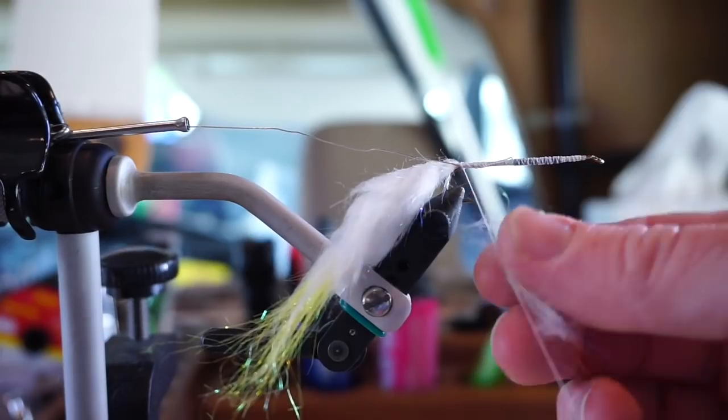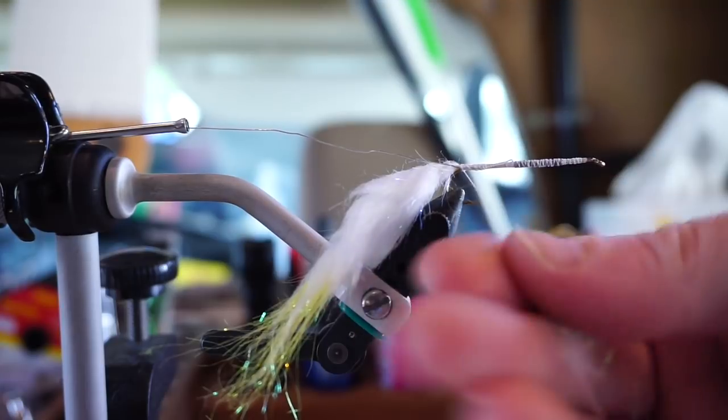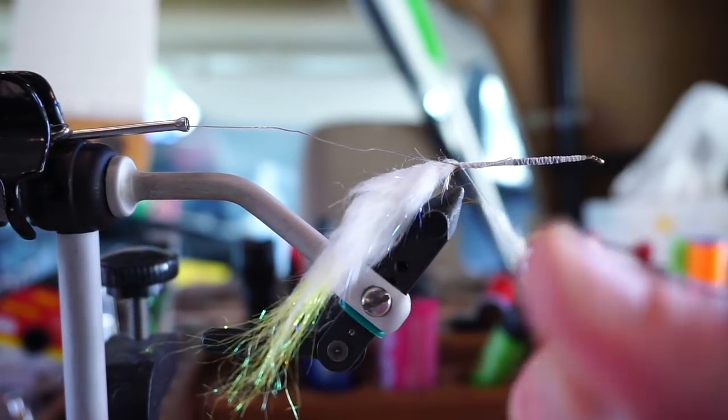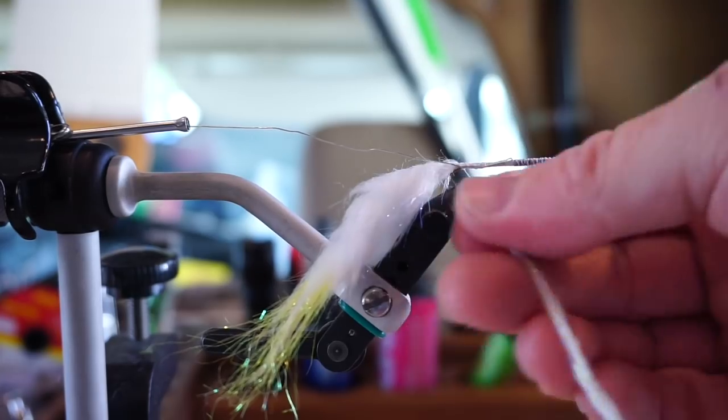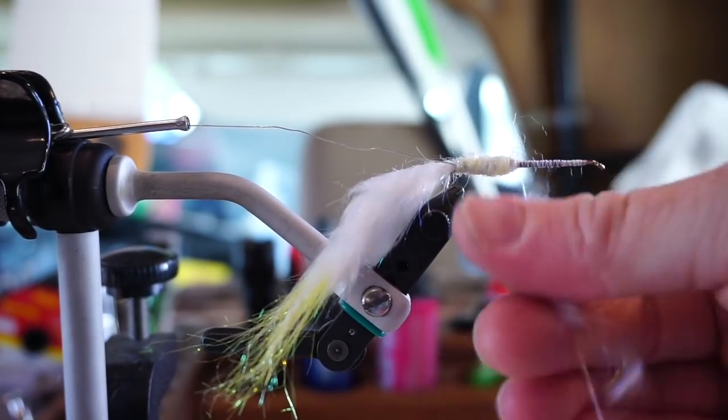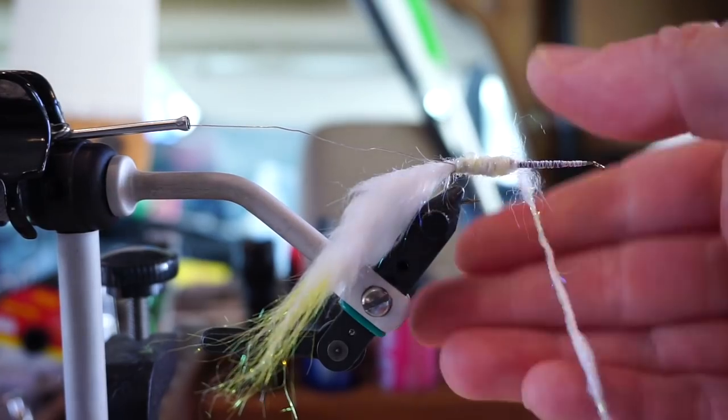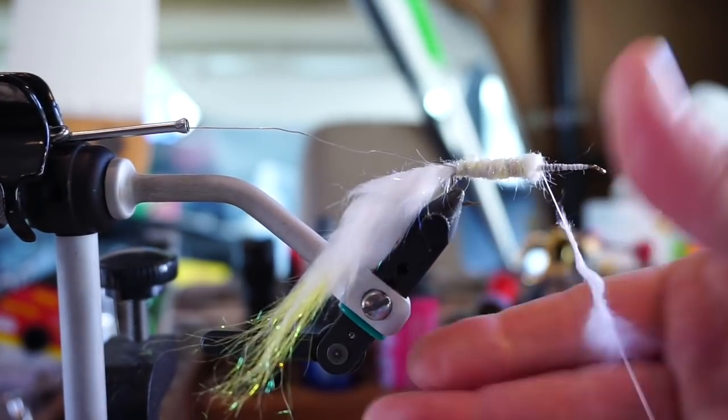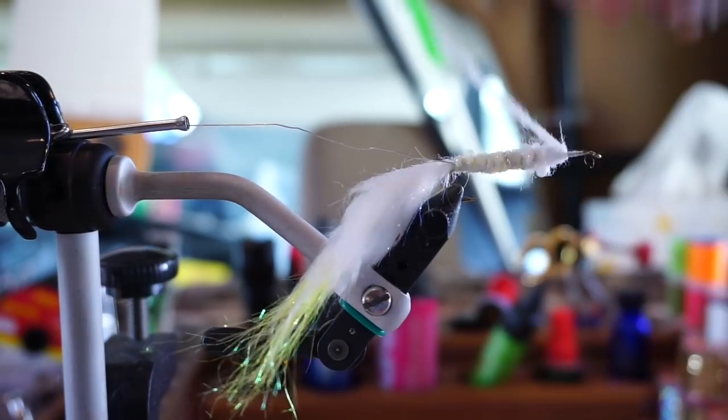I mean waste not, want not, right? Simply dub this onto your thread with a fairly thick noodle, then wrap it up just shy of the hook eye. You might need to add a little more dubbing depending on the length of your hook, and how thick you dub this on. And also don't worry about getting this part perfect. It will be covered up mostly by the feather.